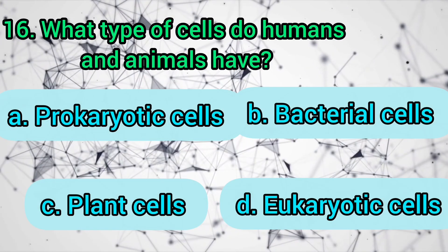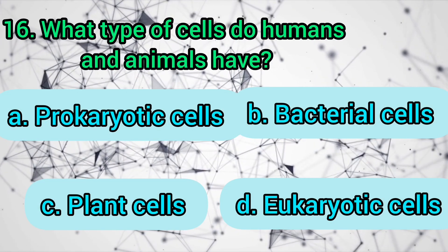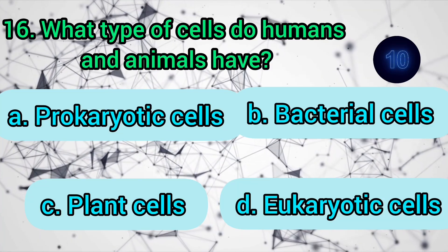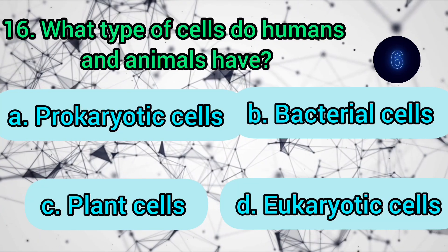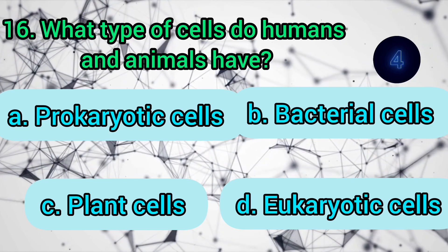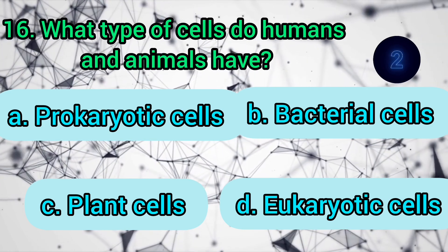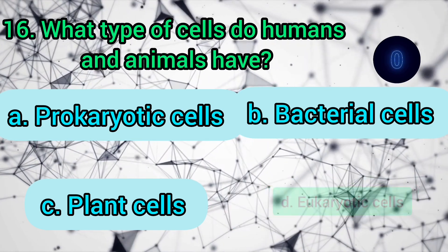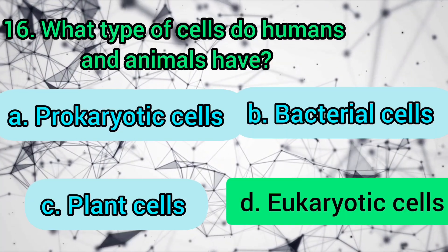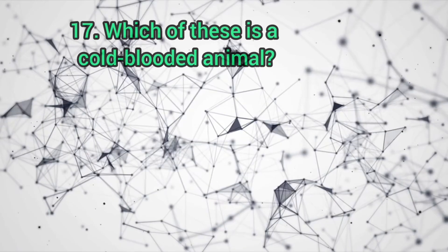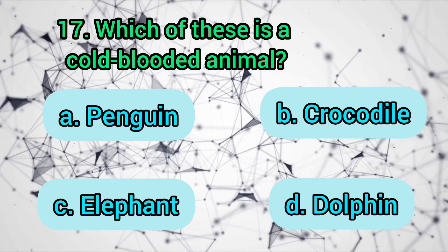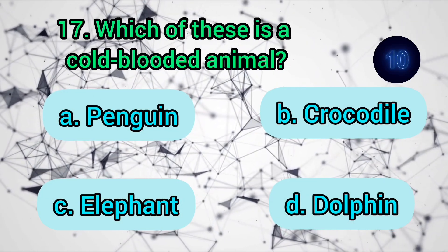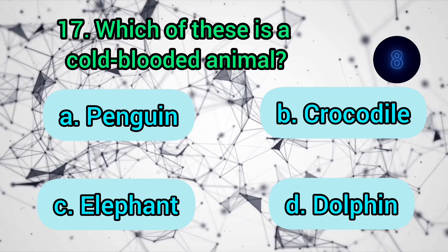What type of cells do humans and animals have? Prokaryotic cells, bacterial cells, plant cells, or eukaryotic cells? The answer is: eukaryotic cells. Which of these is a cold-blooded animal? Penguin, crocodile, elephant, or dolphin?